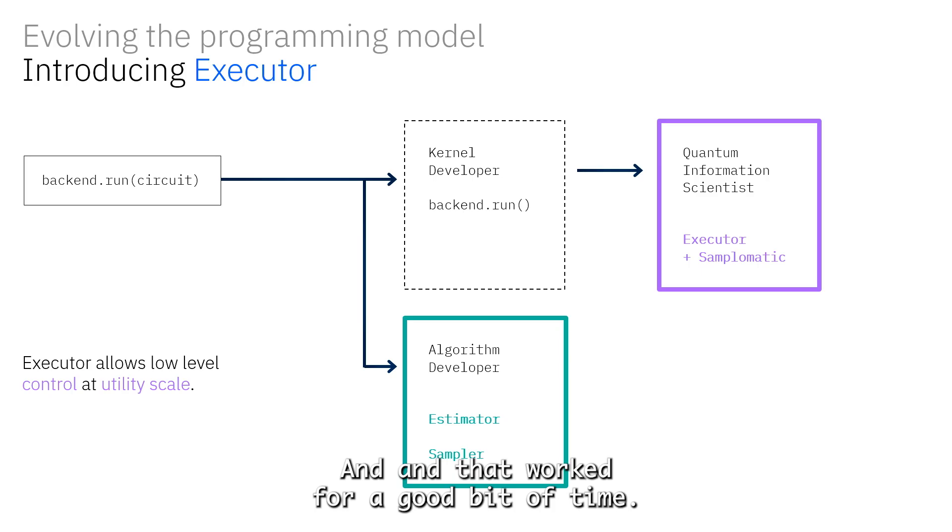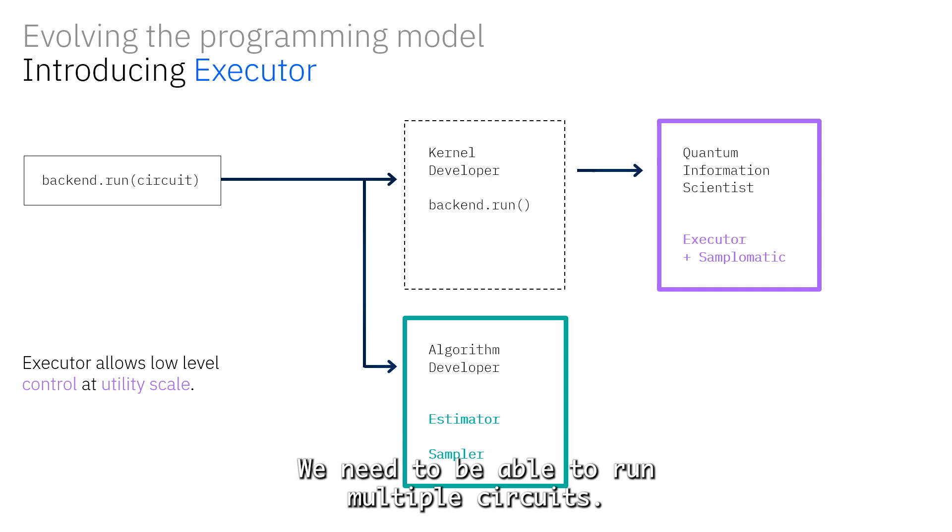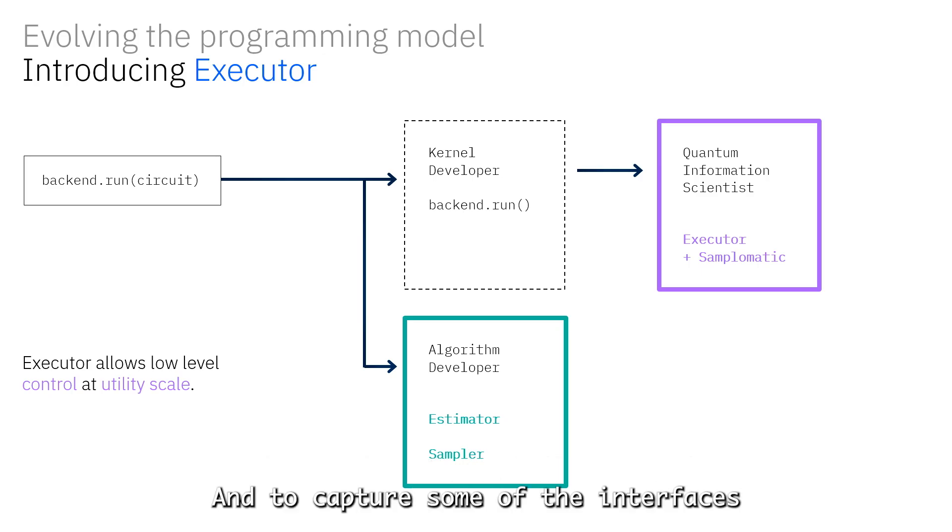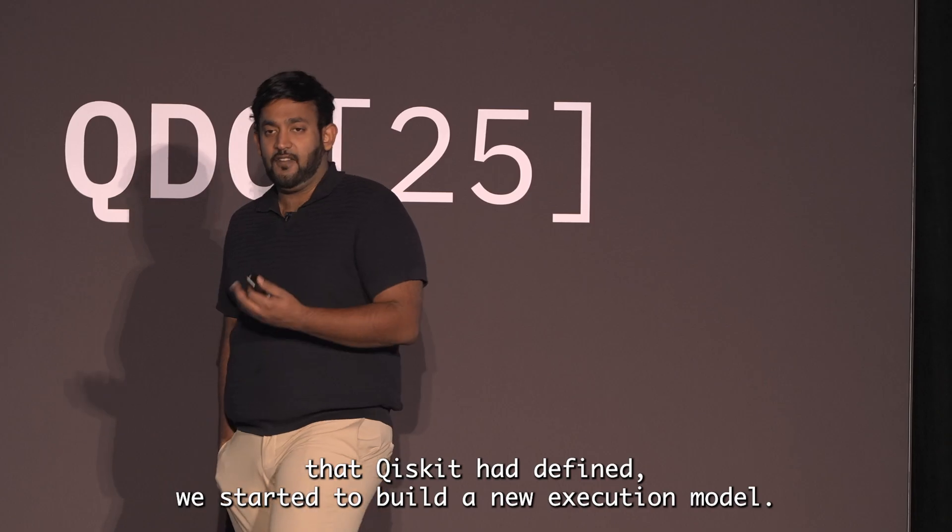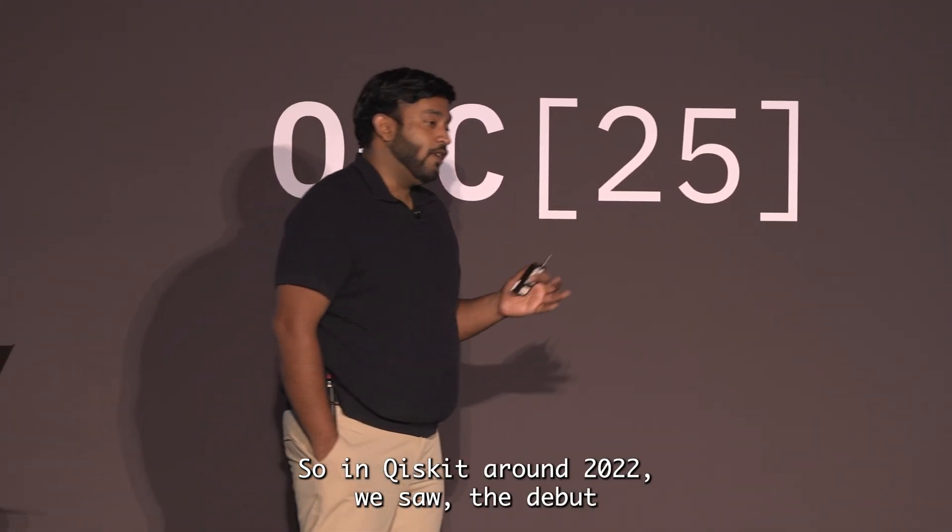That worked for a bit, but as the system scaled and we started to have larger and larger systems, we needed to change the interface because we weren't just running single circuits—we needed to run multiple circuits and augment them in different ways. Around 2022, we built the service called the Qiskit Runtime Service.